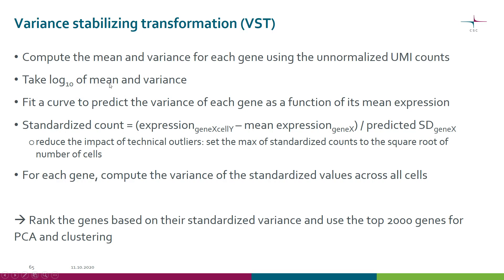Then we take log10 of both the mean and the variance, which gives us a data cloud similar to what was shown in the previous slide. We then fit a curve to that cloud — this is actually a LOESS curve — which will predict the variance of each gene as a function of its mean expression. Then we calculate the standardized counts: from the expression value of gene X in cell Y, we deduct the mean expression value for that gene across all cells, and then divide this number by the predicted standard deviation for that gene, which we got from this curve.